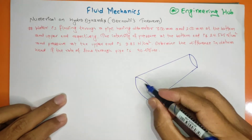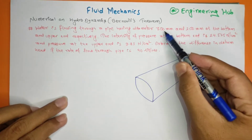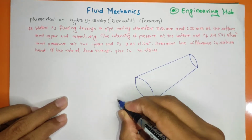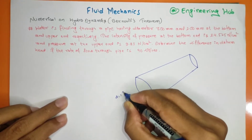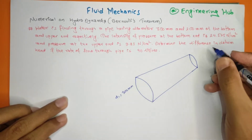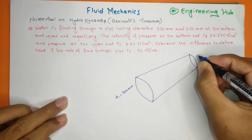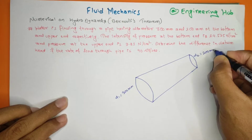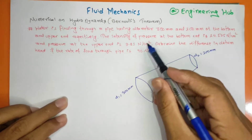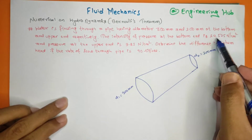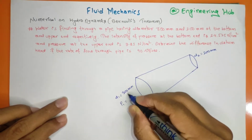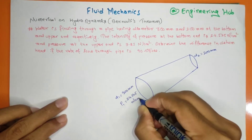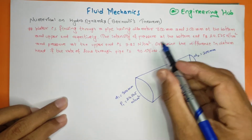The bottom pipe diameter D1 is 300 mm, and the upper pipe diameter D2 is 200 mm. The intensity of pressure at the bottom end is 24.525 N per cm².